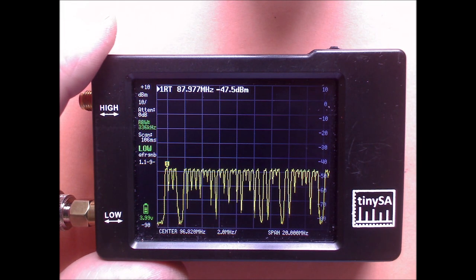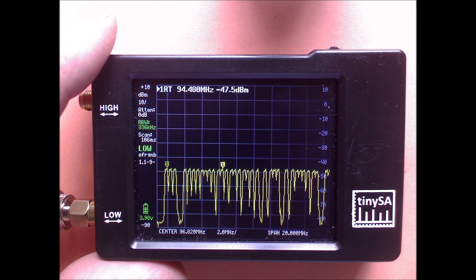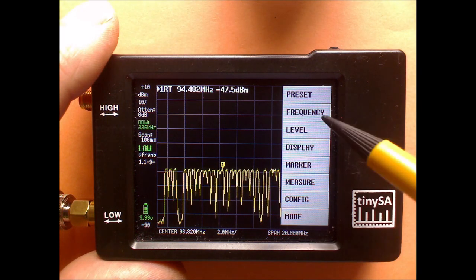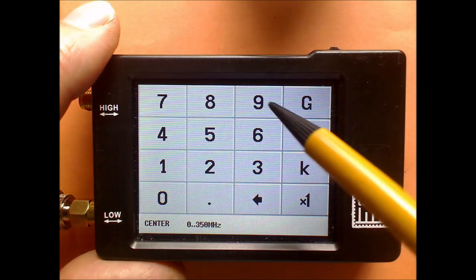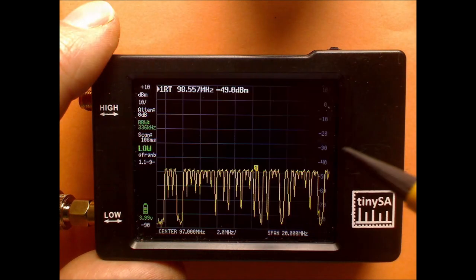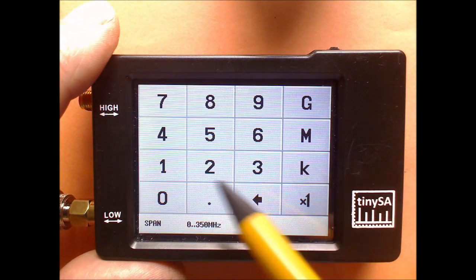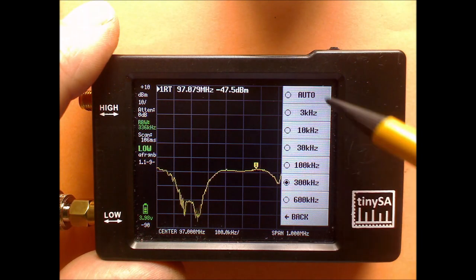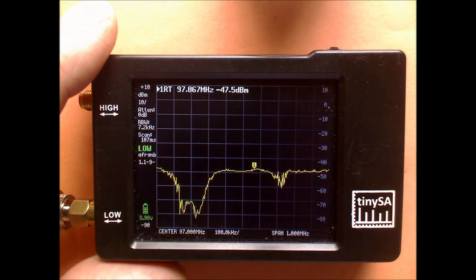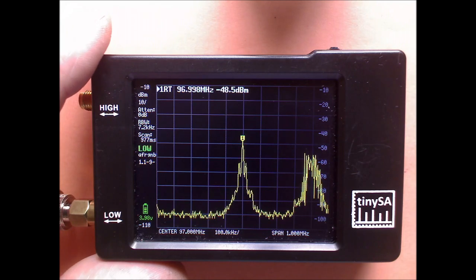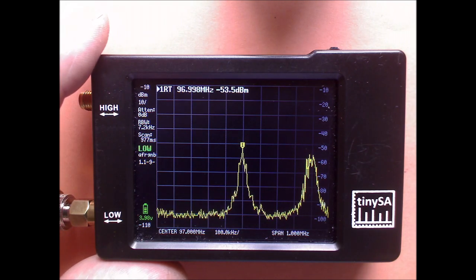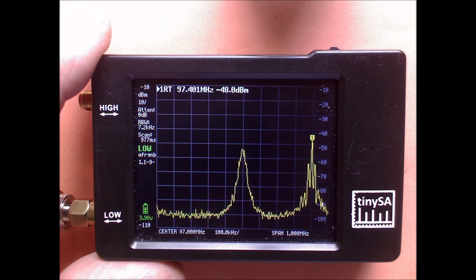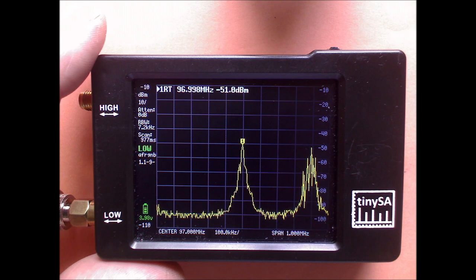To confirm that these are indeed FM stations, we are going to put one station in the center of the scan. We do a span of one megahertz. And here we have the typical appearance of an FM station, where you see the jaggedness on the edges of the signal.